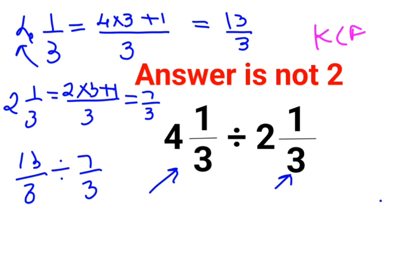Now whenever you have division with fractions, you need to follow the rule of KCF where K stands for keeping the first number as it is, 13 upon 3. C stands for changing the division sign to multiplication and F stands for flipping or taking reciprocal of 7 upon 3 which is 3 upon 7. So answer for this question comes out to be 13 upon 7.